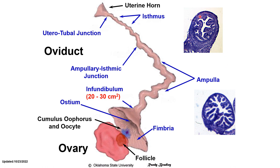Compared to the isthmus, the ampulla is considered a softer structure. The next part is the junction between the ampulla and the isthmus, known as the ampullary-isthmic junction. This is located about midway between the ovary and the uterus, and it is approximately the site at which fertilization occurs. In most domestic animals, fertilization occurs at the ampullary-isthmic junction.